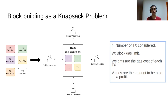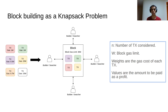We do this by considering the block building as a knapsack problem. In the knapsack problem we have a knapsack with a certain capacity and a set of objects. Each object has a weight and a profit if it is included in the knapsack. The goal is to choose the correct subset of objects to include such that the total weight does not surpass the knapsack capacity but we obtain the maximum possible profit.